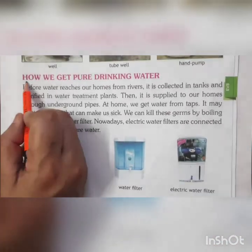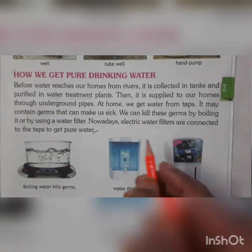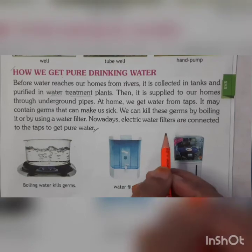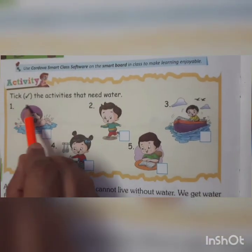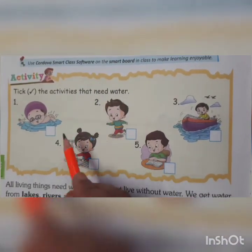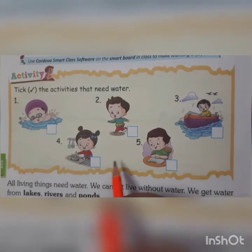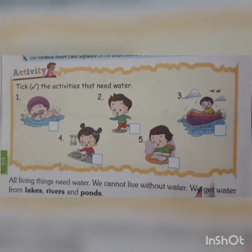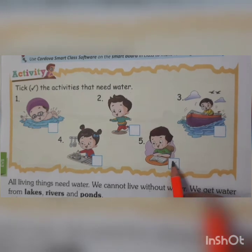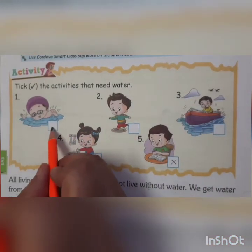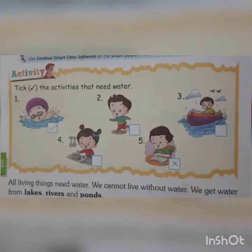You have to watch the video, children, and also do the reading practice from the section 'How We Get Pure Drinking Water' and send it in the group. Also, you have to do the activity on page number 118: tick the activities that need water, and cross out the activities that do not need water. For example, does reading need water? No — cross it out. Does swimming need water? Yes — tick it. Complete this activity. Thank you.